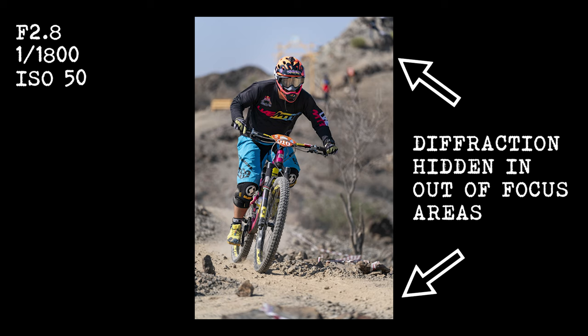At the wider apertures, this lens diffraction will tend to be offset by the bokeh in your shots — those soft out-of-focus bits around your subject. This is especially true if you focus on a subject that is near the camera, pushing that background much more out of focus than normal.